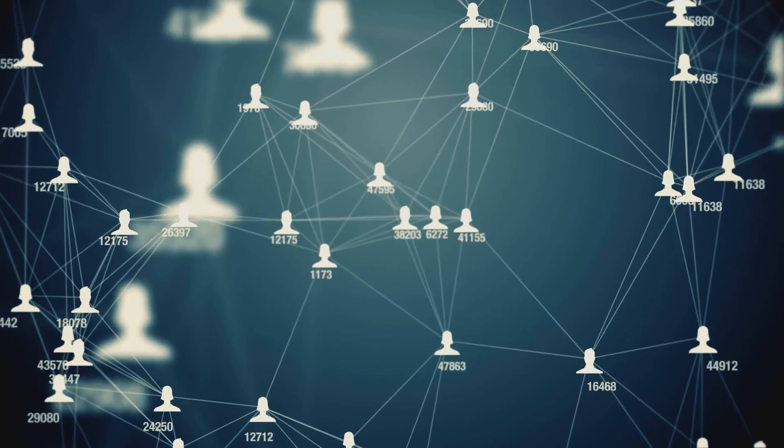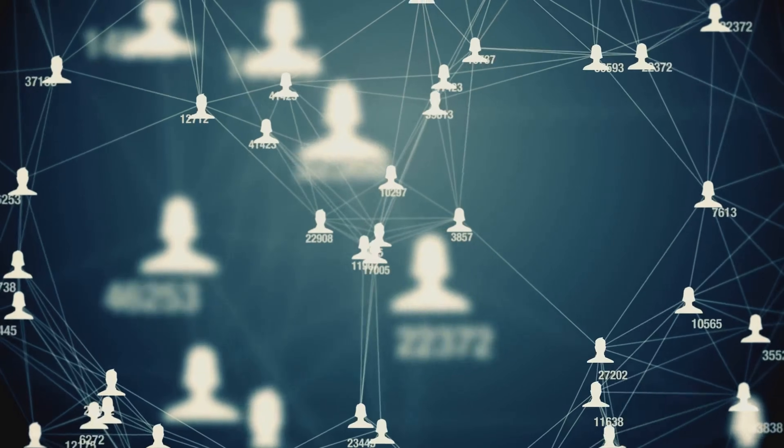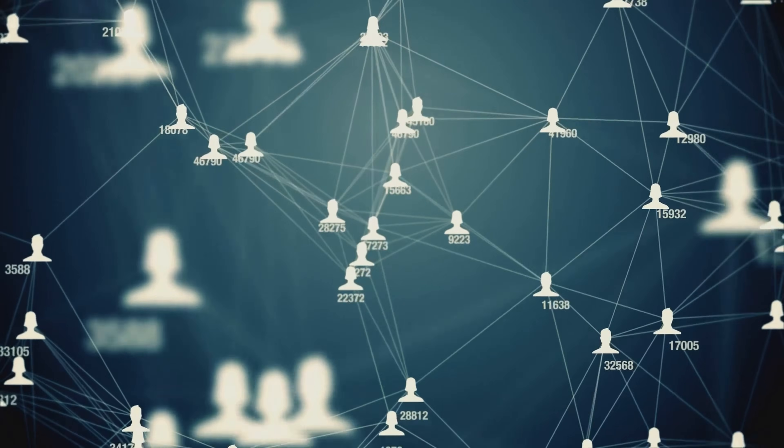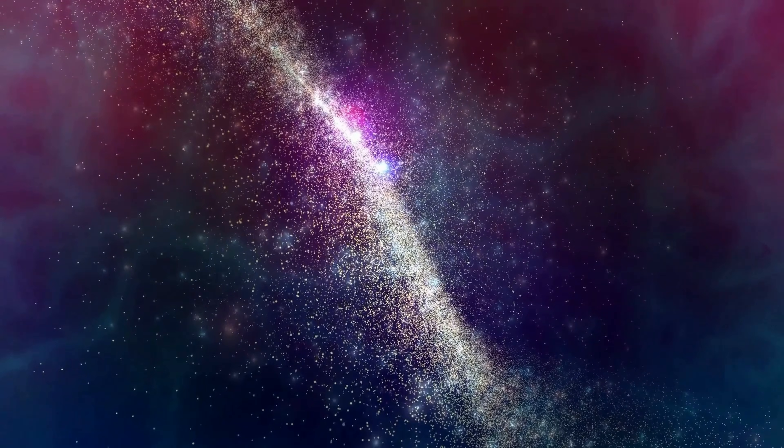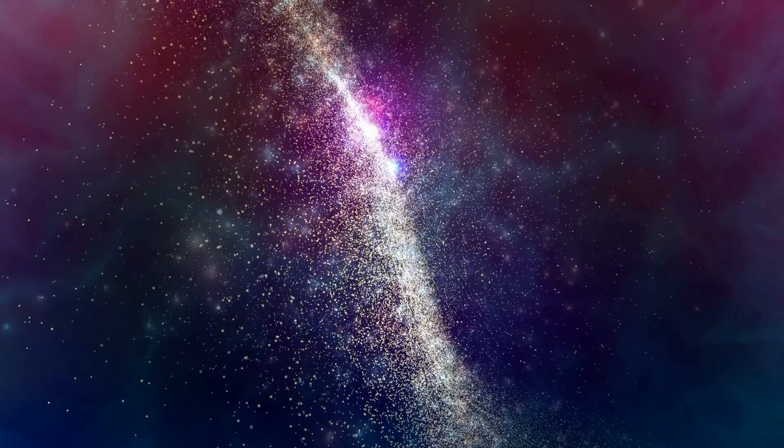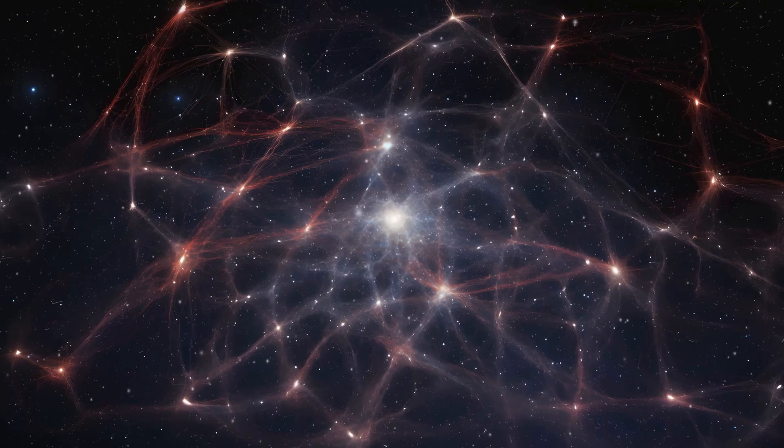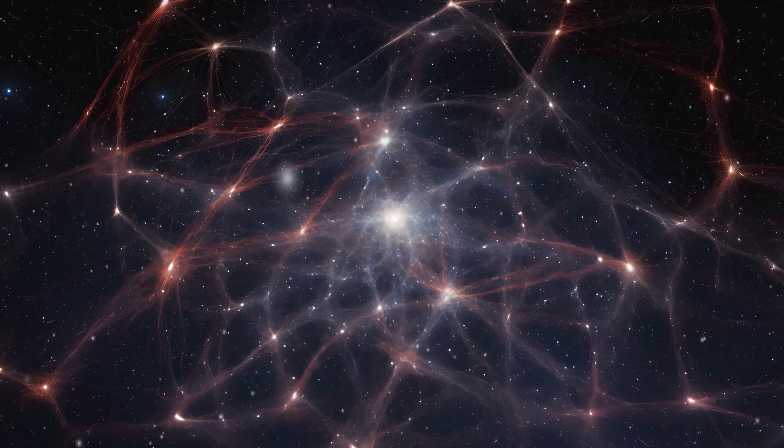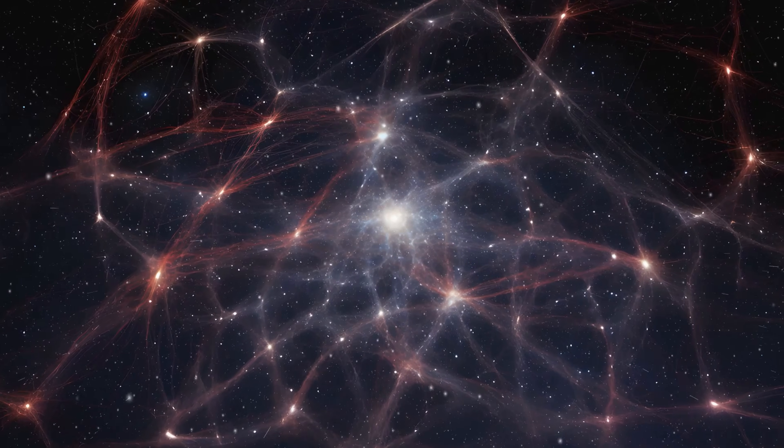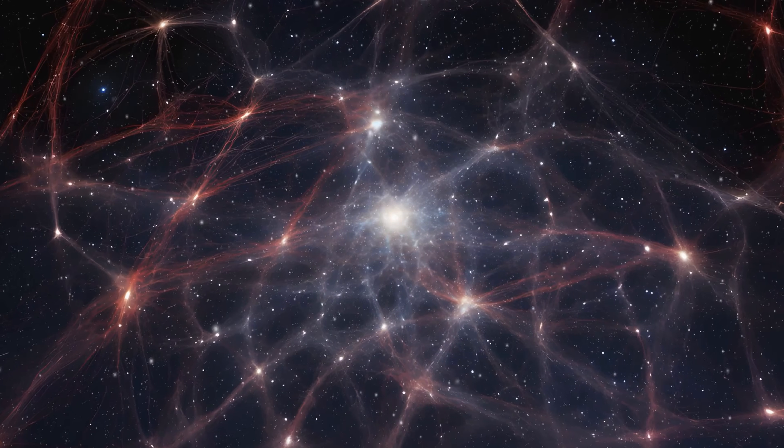Then they used an algorithm called Friends of Friends to connect nearby galaxy clusters. This algorithm traced the connections, revealing how galaxy clusters clump together. And when applied to the data, it unveiled the full staggering extent of Quipu, confirming it as a single, unified superstructure, not just a random alignment of clusters.